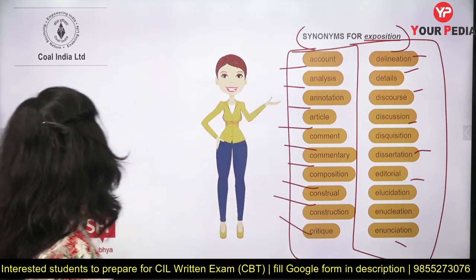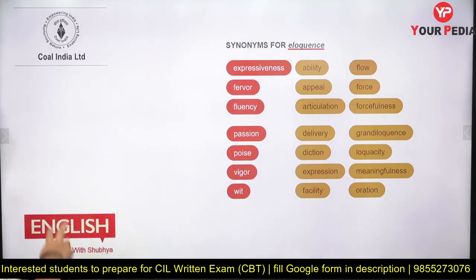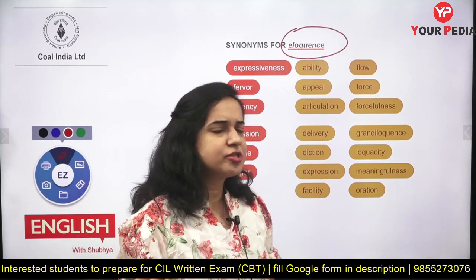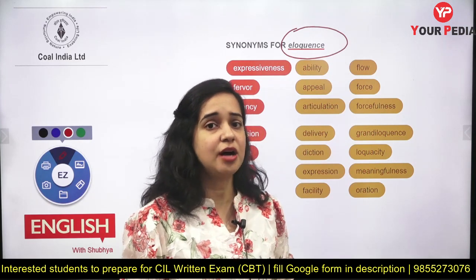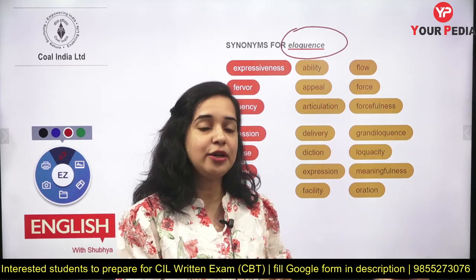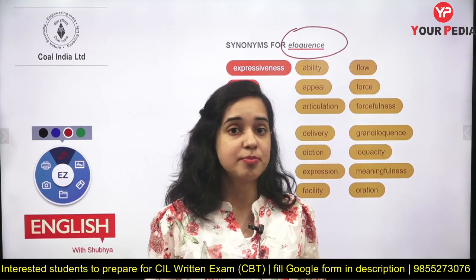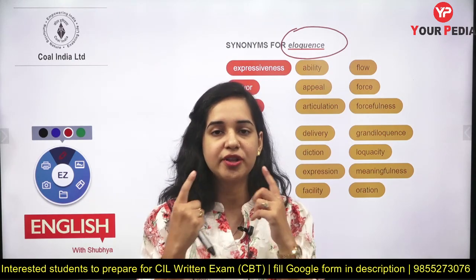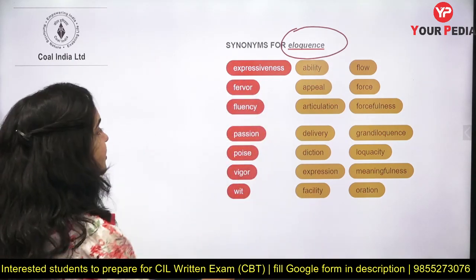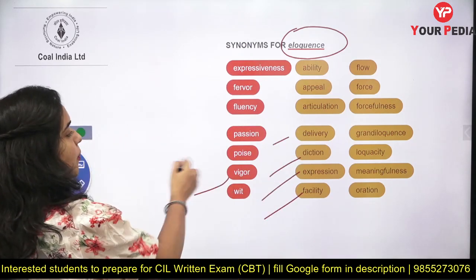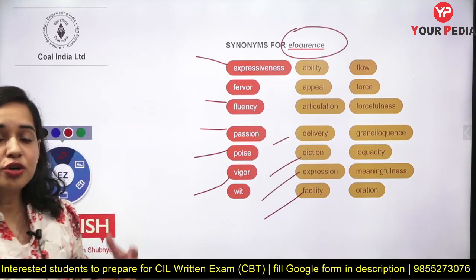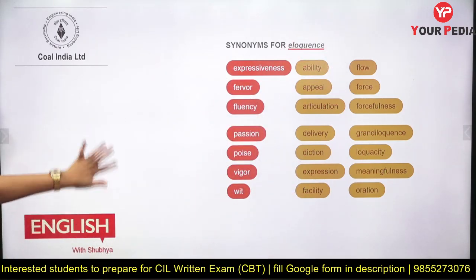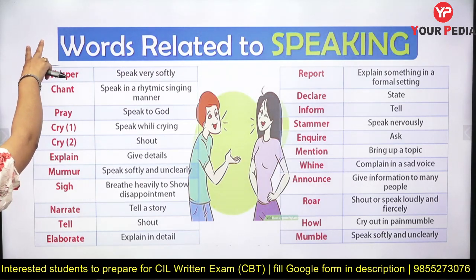Eloquence is simply the way you speak — your pronunciation and fluency in English. Every person has a different way of speaking and there is nothing wrong with that. It refers to your delivery, diction, expression, fluency, and expressiveness. Note down important words as they come up throughout the lesson. Some words related to speaking will be discussed next.